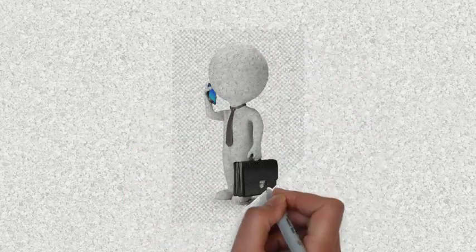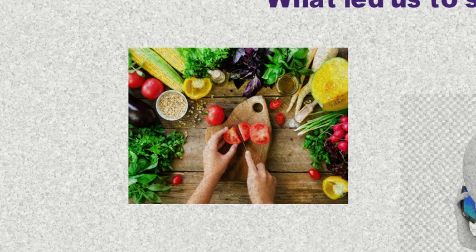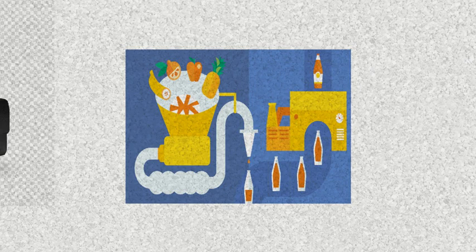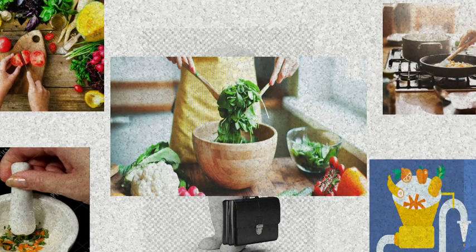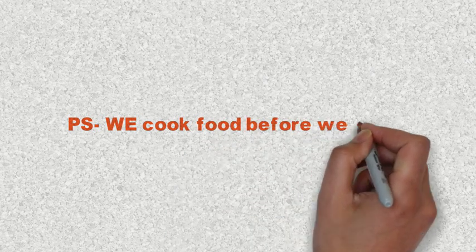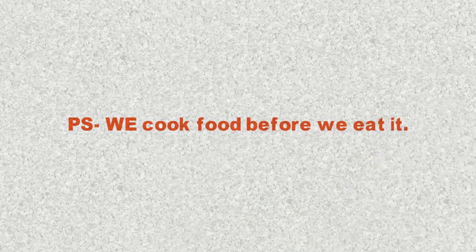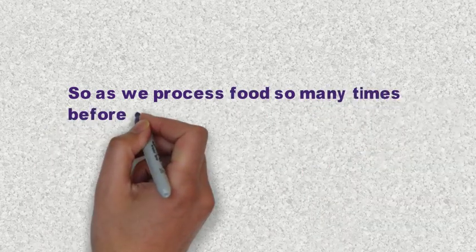Civilized humans cut, crush, cook, process, and modify food in many different ways before consuming it, thus adding variety to it. So because we process food so many times before eating, we need to know what kind of chemical changes take place when food is prepared.